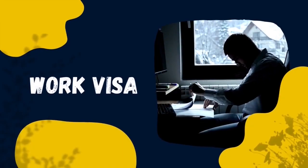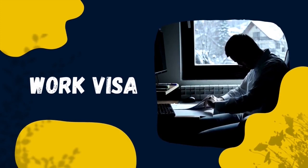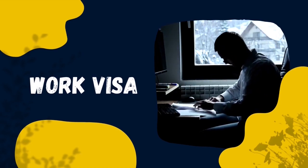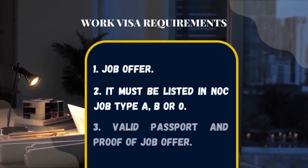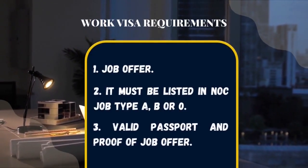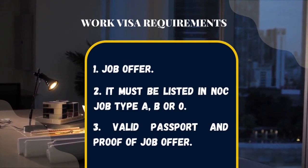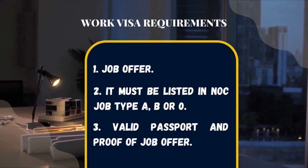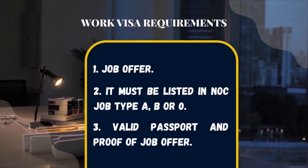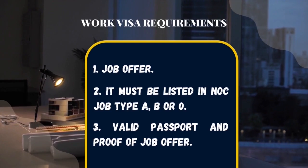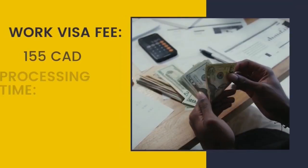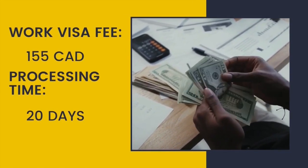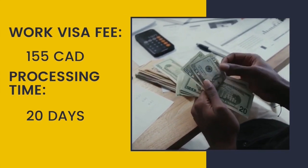Number 2: Work visa. If you want to work in Canada, you can apply for a work visa along with a work permit. To qualify, your employer must first offer you a job and then complete the necessary paperwork before applying on your behalf. To be eligible, you must: 1) have a job offer from a Canadian employer; 2) the job offer must be in an occupation listed as skill level A, B, or 0 in the National Occupational Classification (NOC); 3) provide a valid passport and proof of your offer of employment. The Canada work visa fee is $155 Canadian dollars, and the average processing time is 20 days, but it can take as long as three months if biometrics or other special considerations are required.